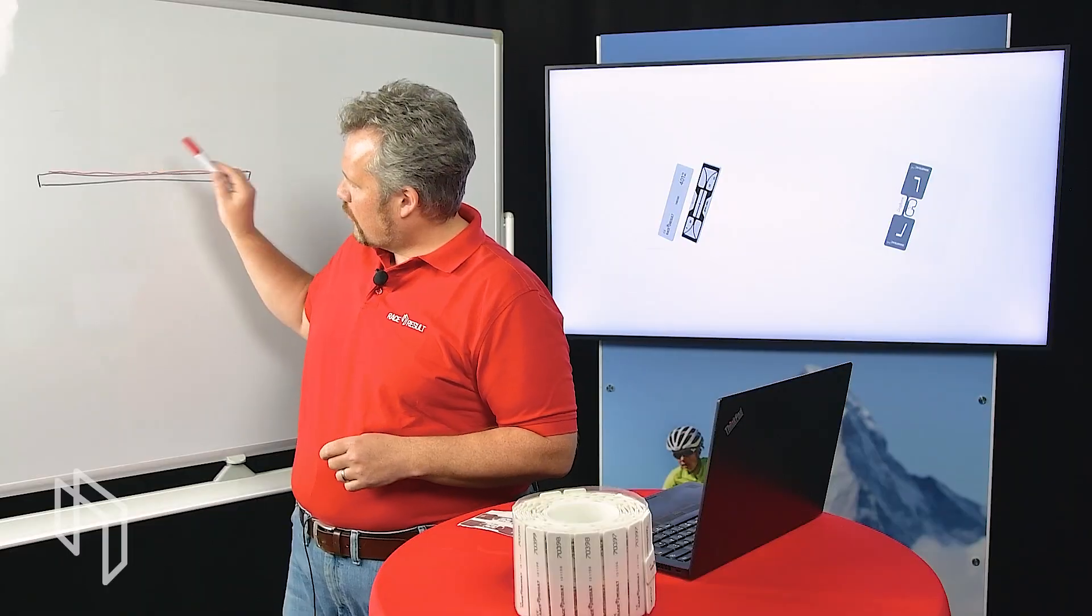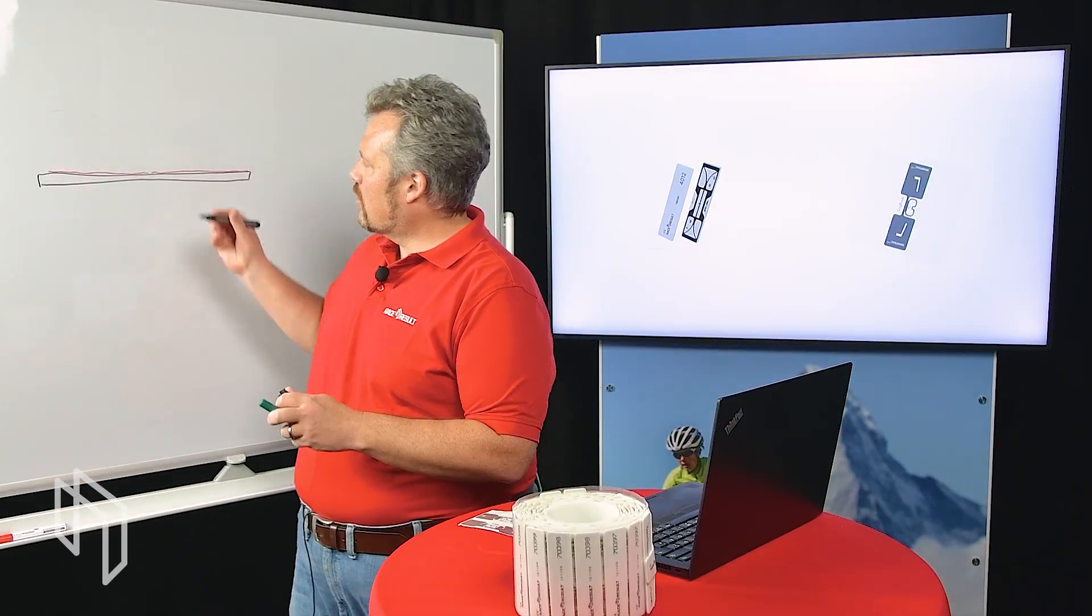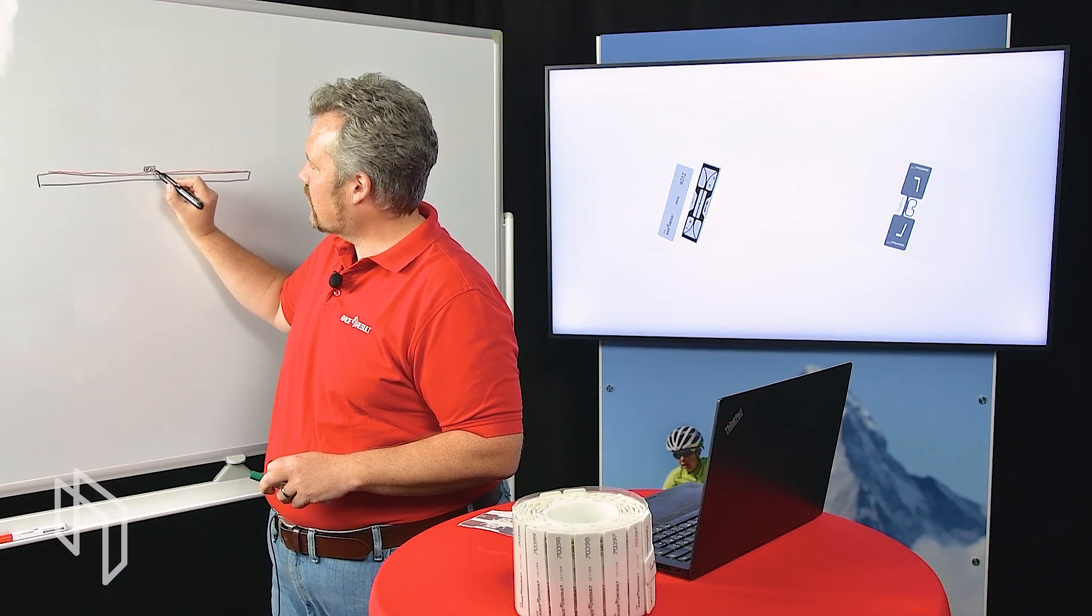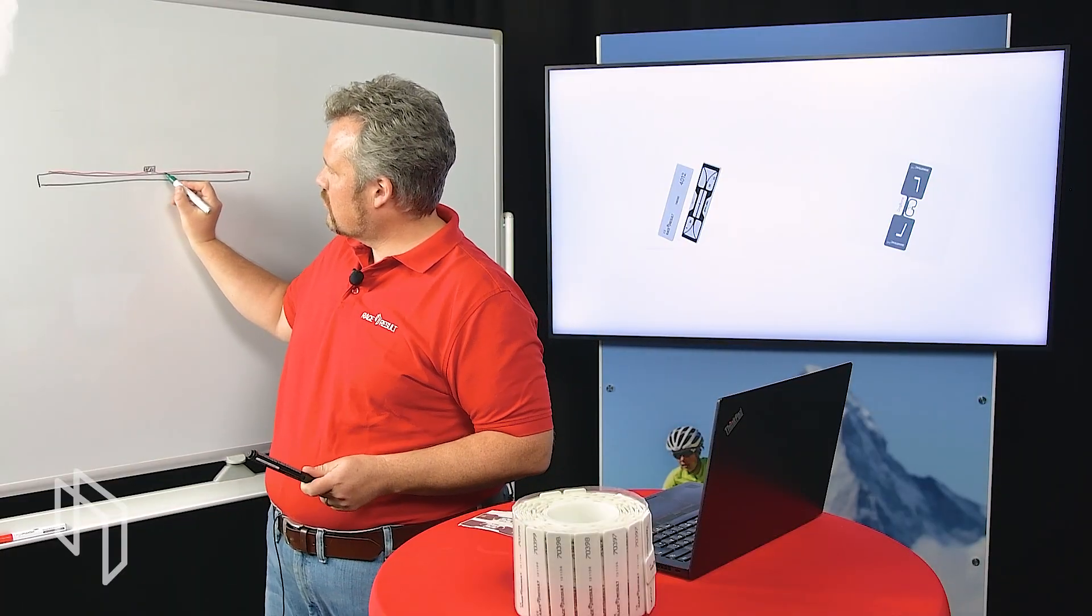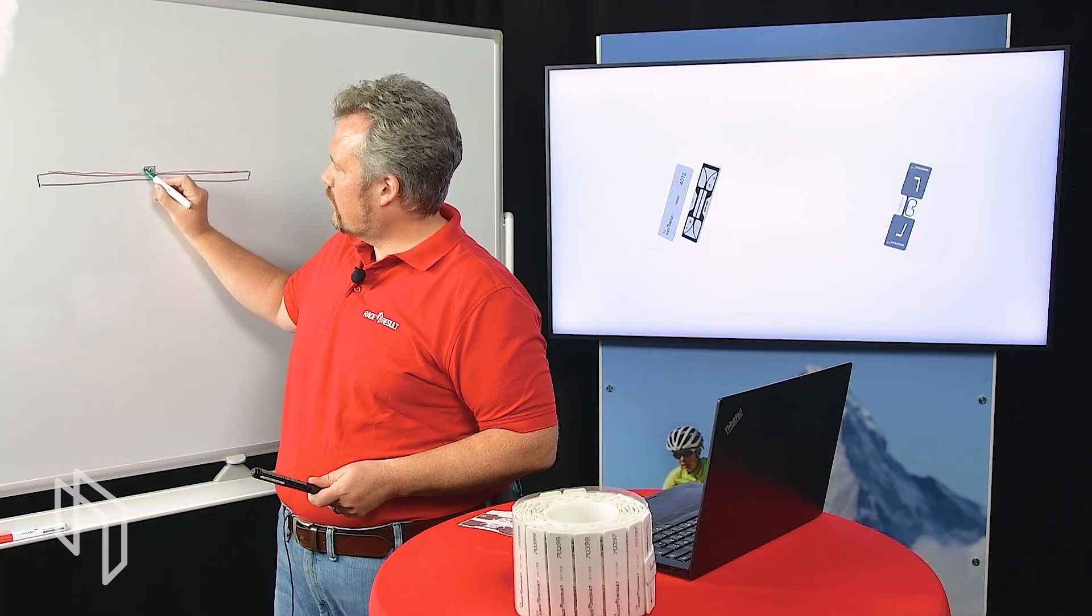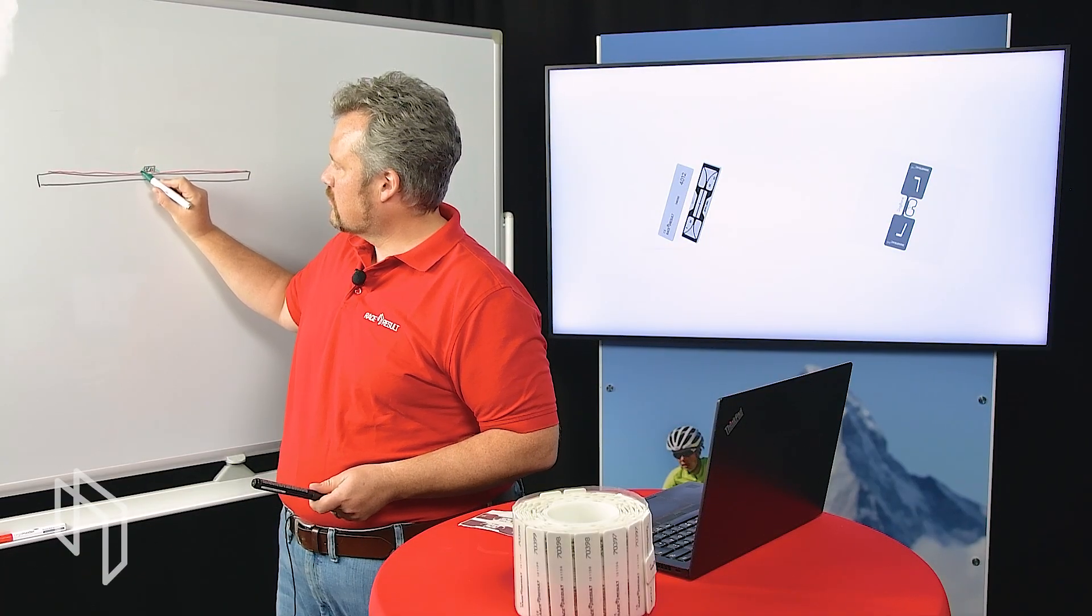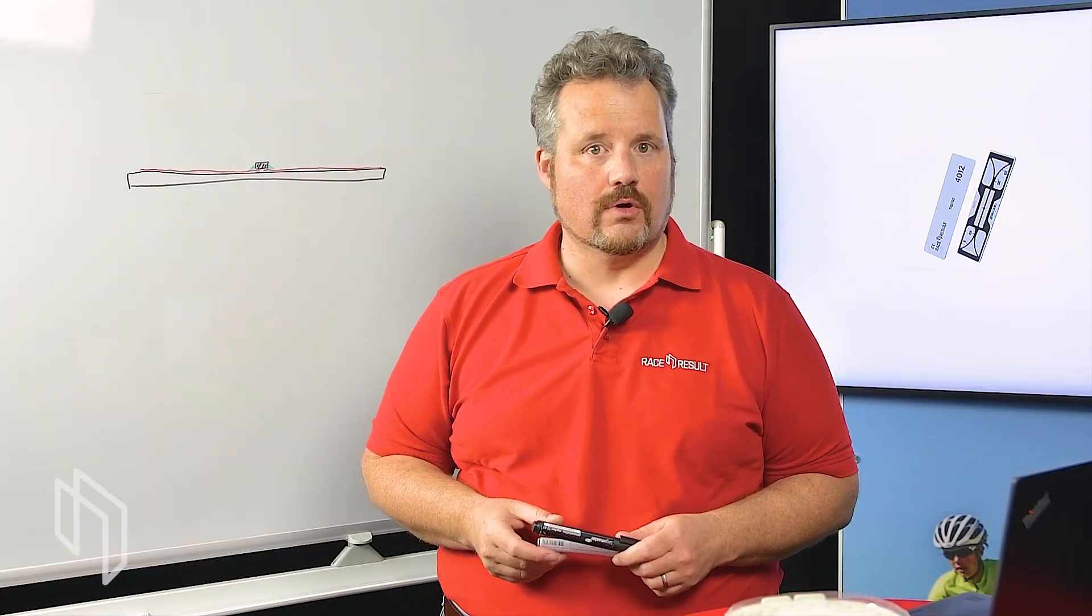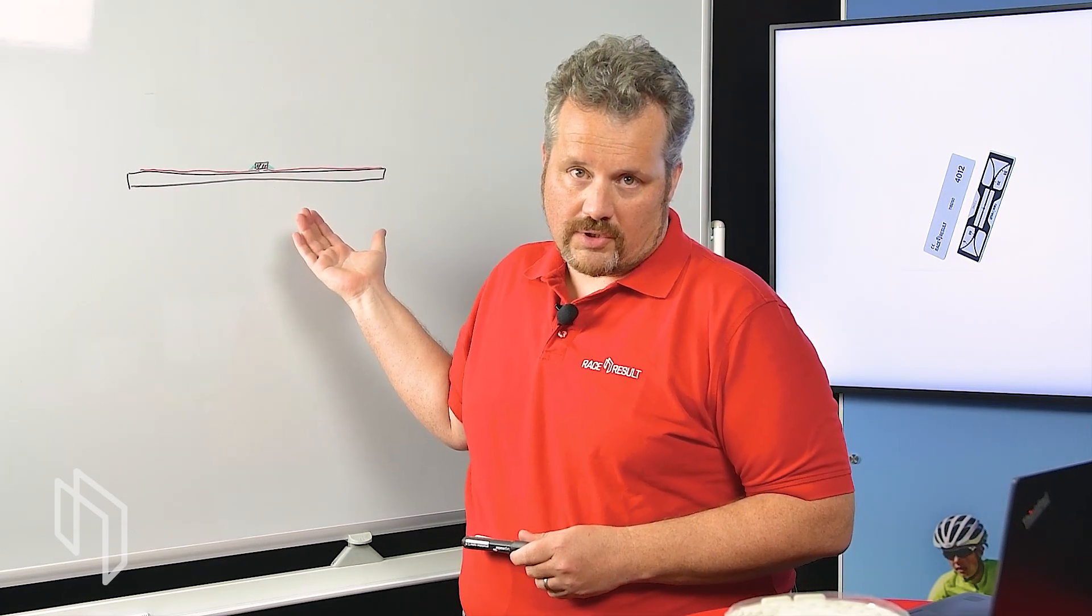Then on top of that again, you typically have your actual RFIC chip, which is typically in black and that is glued to the aluminum antenna with some conductive adhesive. This is the typical dog bone or whatever transponder which is used for logistics applications, and the main goal here is to be as cheap as possible for the production company.